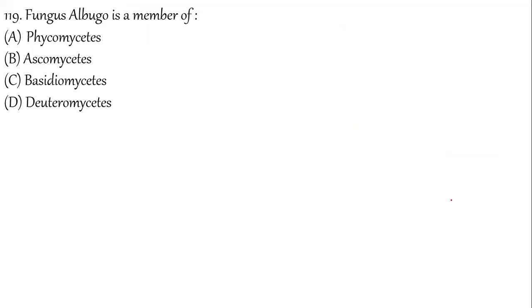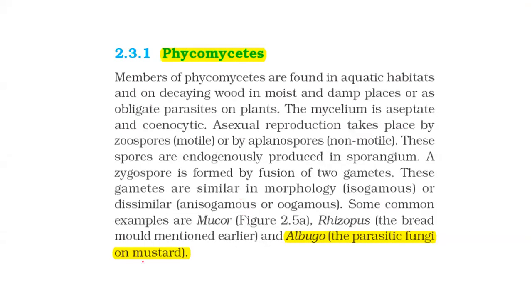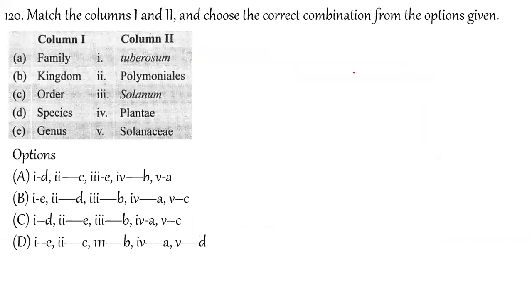Question 119: Fungus Albugo is a member of Phycomycetes — a parasitic fungus on mustard. This is a direct NCERT answer. Question 120: Match the following from the living world. Family always ends with the suffix '-aceae.' Tuberosum is a species, Polymoniales is an order, Solanum is a genus, Plantae is the kingdom. The correct answer for question 120 is option A.